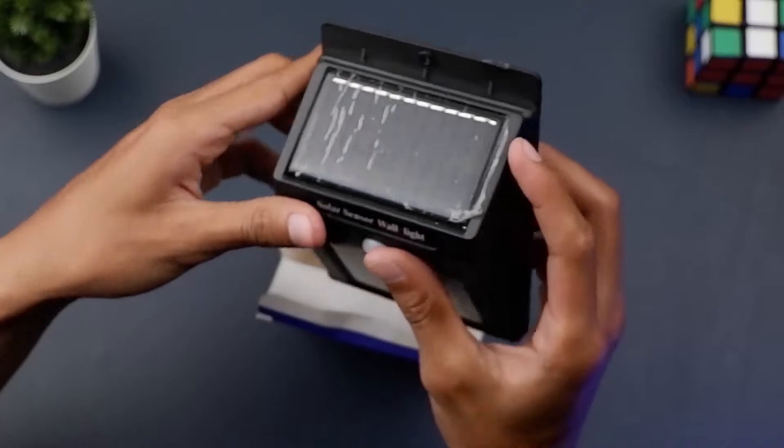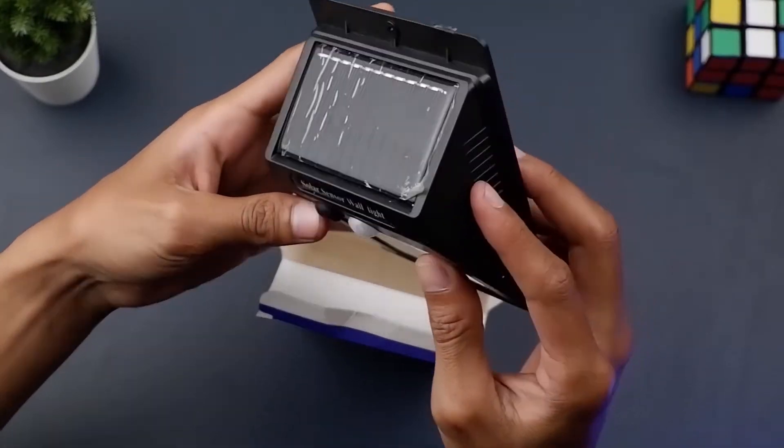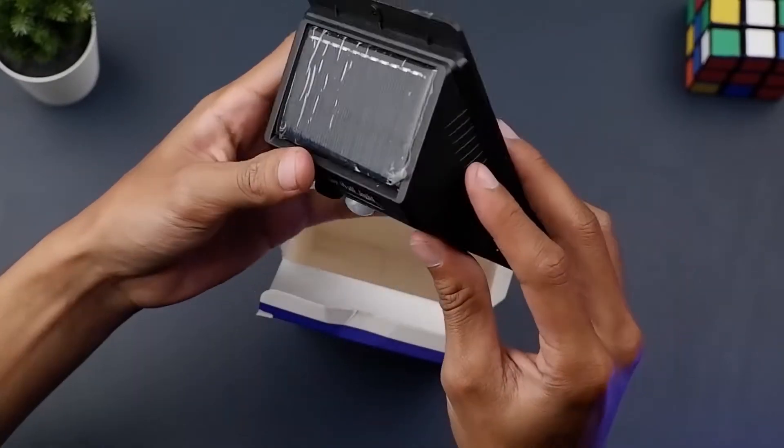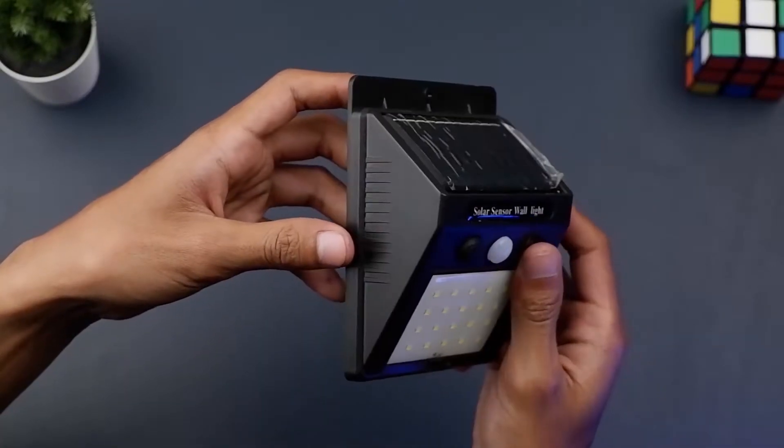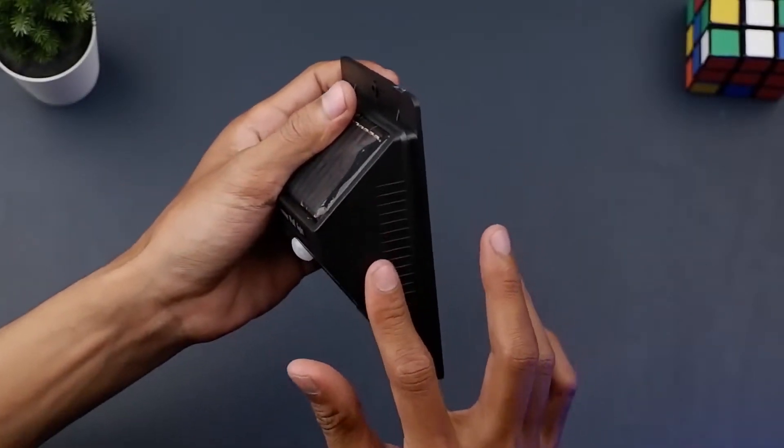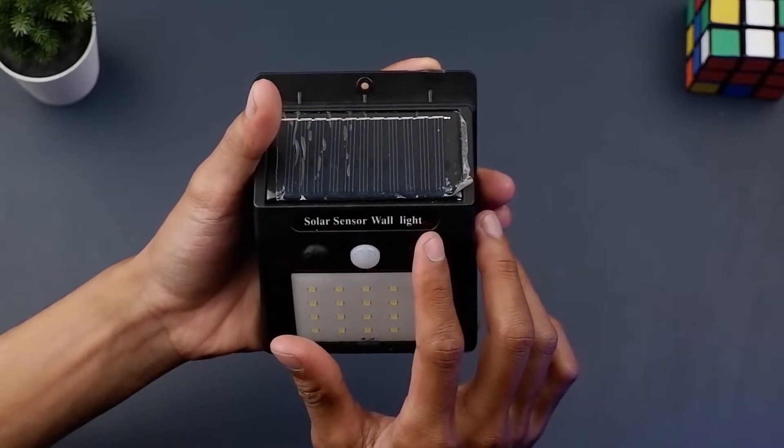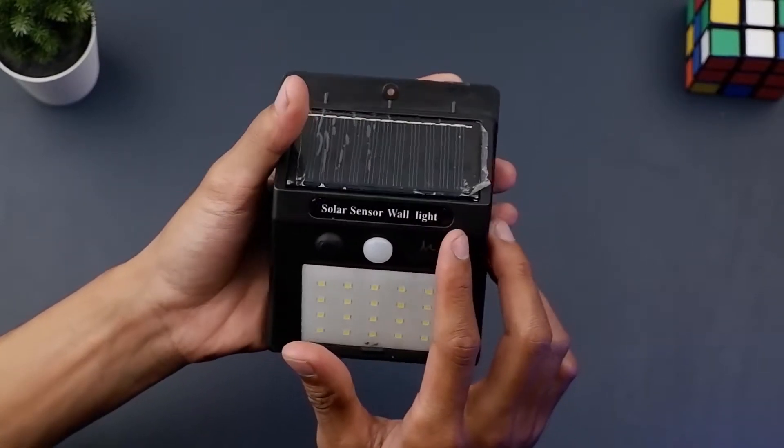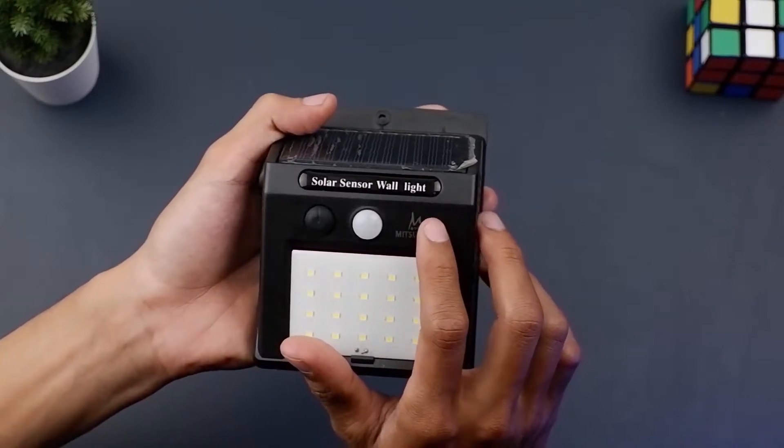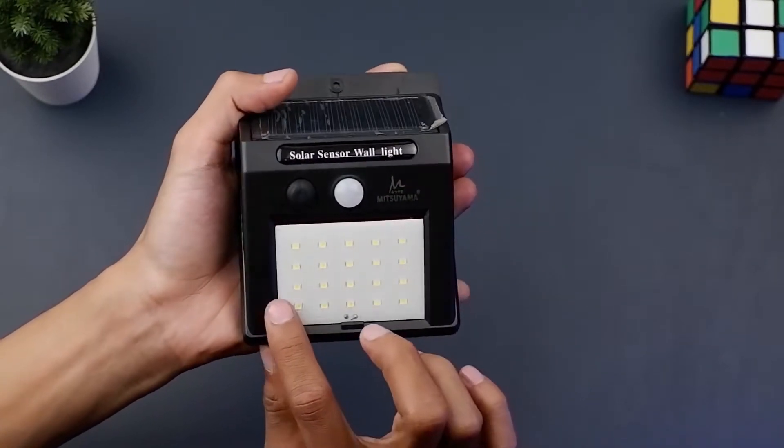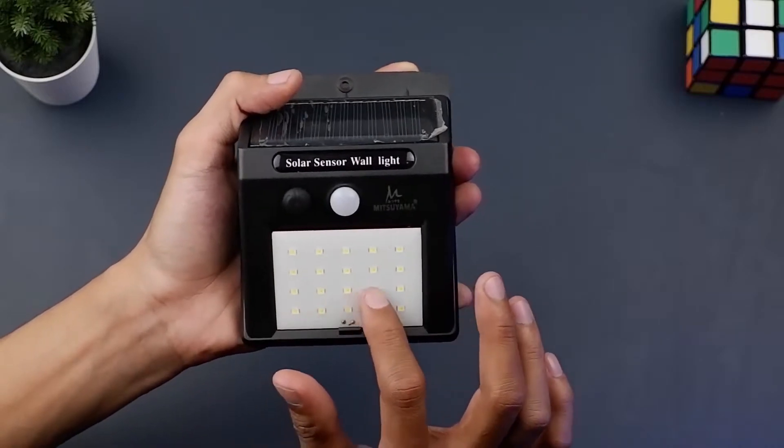Ini dia lampu emergency solar panel seperti ini bentuknya ya. Material lampu ini dari plastik dengan warna hitam. Disini ada tulisan solar sensor wall light. Dan juga terdapat logo Mitsuyama dengan ukuran yang kecil. Lampu led ada 20 visis atau 20 lampu led yang kecil-kecil.